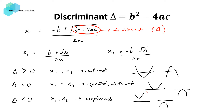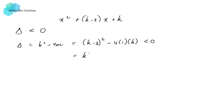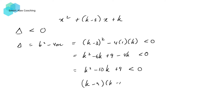The scenario we're looking for is a positive definite parabola, so we require the discriminant to be less than zero, and the coefficient of x squared must be positive. The expression is x squared plus k minus 3 times x plus k. We need b squared minus 4ac less than zero, which gives us k minus 3 squared minus 4 times 1 times k less than zero. Expanding, we get k squared minus 6k plus 9 minus 4k less than zero, which factorizes into k minus 9 times k minus 1 less than zero.